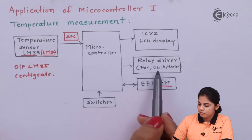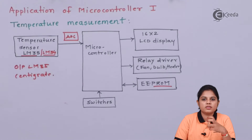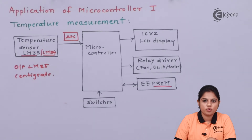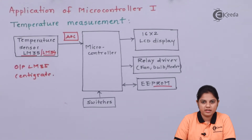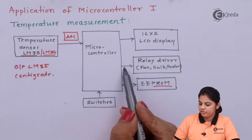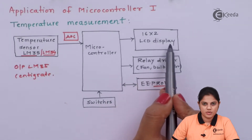A relay driver, fan, bulb, or heater is connected for temperature control. The temperature of the room can be controlled by either increasing or decreasing the temperature of an air conditioner, or increasing or decreasing the speed of the fan. This is how you control the temperature of that room. That particular device is also interfaced with the microcontroller, along with a 16x2 LCD display.